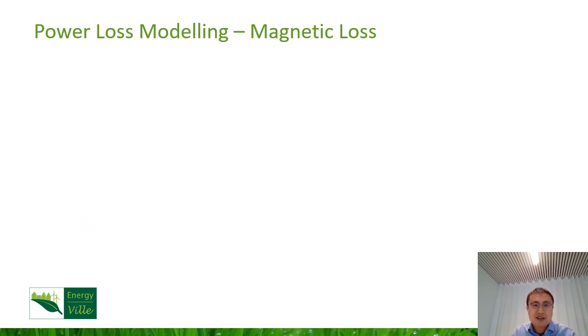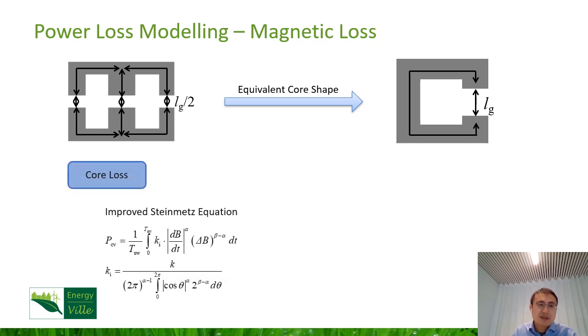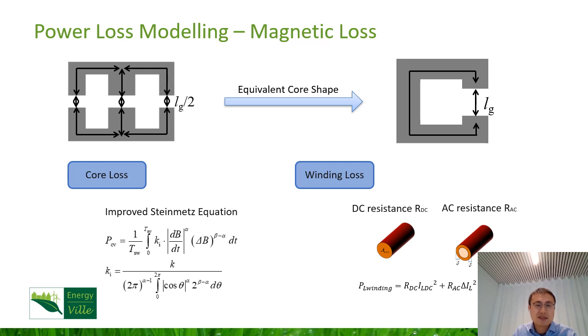But how to evaluate the losses? In this paper, we focused on E-shape cores, so the equivalent C-shape is analyzed for designing the inductor. The losses on the inductor are mainly core losses and winding losses. For the core losses, the improved Steinmetz equation is used for calculating the core losses. As for the winding losses, considering the current ripple, the skin effect is considered. So in the end, the winding losses consist of DC resistance losses and AC resistance losses.